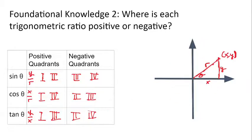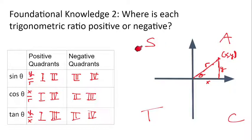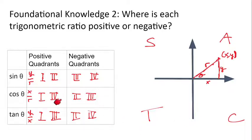Here's a little way to memorize this: All Students Take Calculus. All trig ratios are positive in quadrant 1. Sine is positive in quadrant 2. Tangent is positive in quadrant 3. And cosine is positive in quadrant 4.